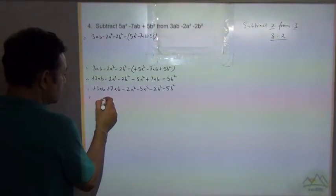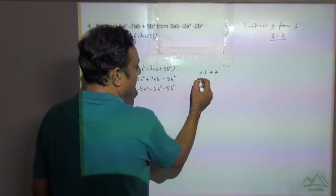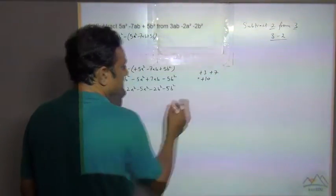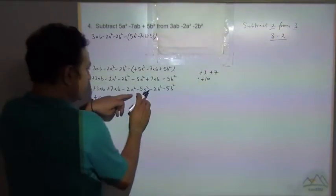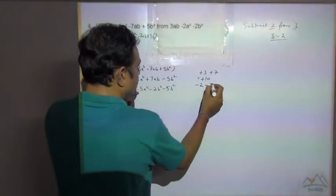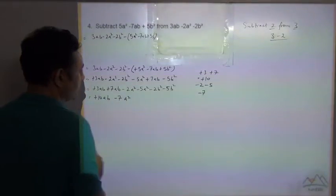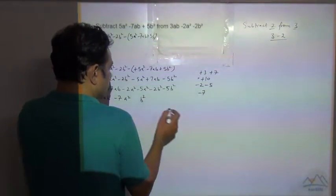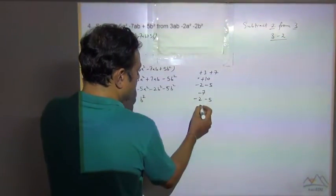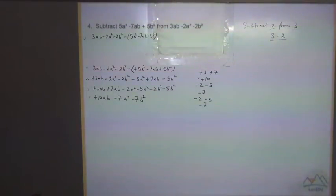Now collecting like terms. The algebraic factor ab: numerical factors are plus 3 and minus 7 — same sign, add both: 7 plus 3 equals 10, common sign is minus, giving minus... wait, 3 plus 7 is 10 with plus sign: plus 10ab. For a²: minus 2 minus 5, same sign, 5 plus 2 equals 7, common sign minus: minus 7a². For b²: minus 2 minus 5 gives minus 7b². Final answer: 10ab minus 7a² minus 7b². This is Method 1.